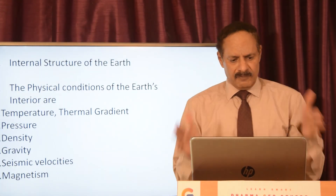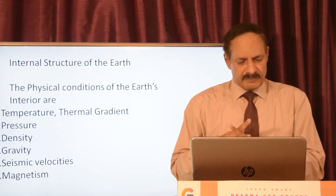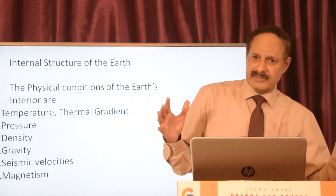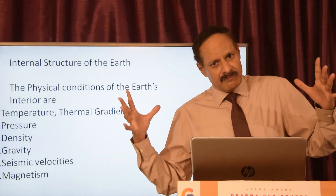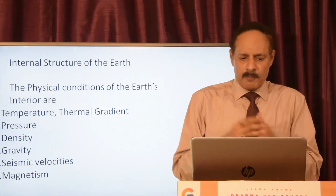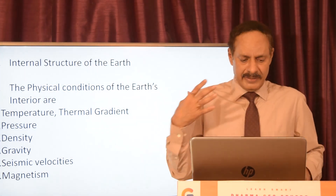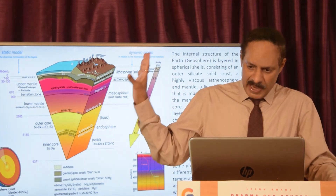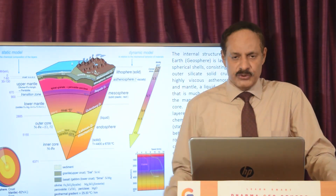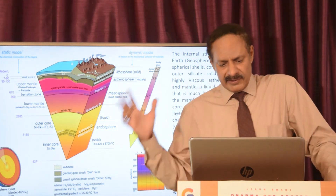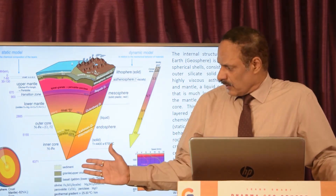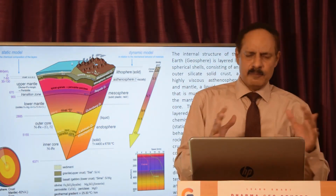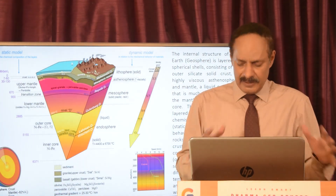So this is the broad framework of the presentation. We first look at one good diagram which shows everything about the internal structure of the Earth — the static side and the dynamic side, the chemical side and the physical side. Since the topic is about the physical conditions of the Earth's interior, we'll talk about temperature, thermal gradient, pressure, density, gravity, seismic velocity, and magnetism. This diagram captures the entire internal structure — the geosphere in spherical shells — and also shows density variations from the upper crust to the inner core and the seismic velocity. This is a very impressive diagram you should practice.